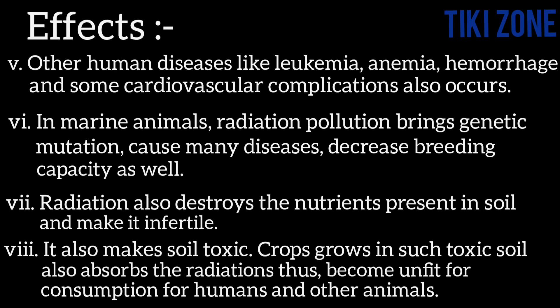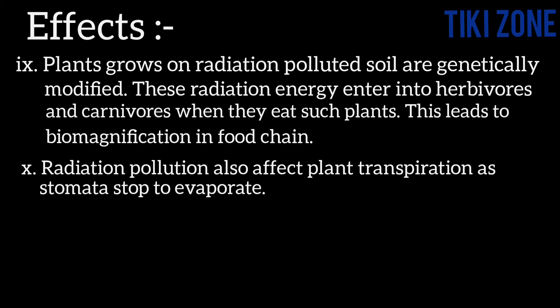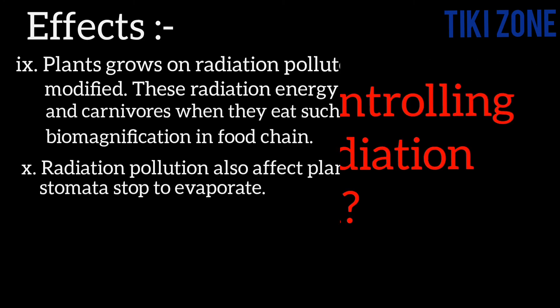Radiation also destroys the nutrients present in soil and makes it infertile, and also makes soil toxic. Crops grown in such toxic soil absorb the radiations and become unfit for consumption by humans and other animals. Plants grown in radiation-polluted soil are genetically modified. These radiation energies enter into herbivores and carnivores when they eat such plants, leading to bio-magnification in the food chain. Radiation pollution also affects plants' transpiration as stomata stop evaporating.